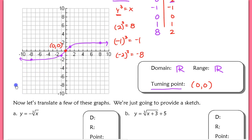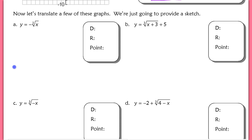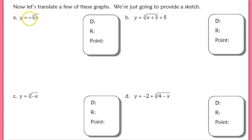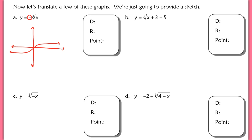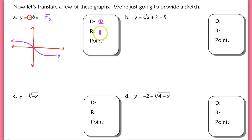Now let's apply those ideas to translating some graphs. First, we have y equals negative cube root of x. That negative out in front is a reflection of the graph over the x-axis. I'll draw the mother function in red, then flip it over the x-axis. That gives the graph of negative cube root of x. The domain and range are all reals, and the turning point is (0, 0).